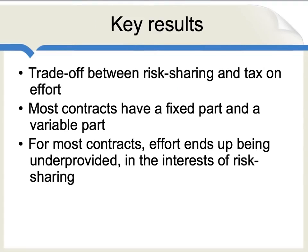The economic theory here is pretty straightforward, and it corresponds to what we observe in the real world. First, there tends to be a trade-off when writing a contract between that contract being good at sharing risk and whether that contract puts too high a tax on effort. Markets are always weighing off these two qualities of a contract at the margin: risk sharing versus tax on effort.